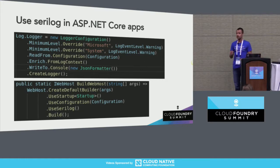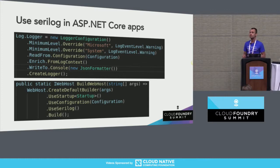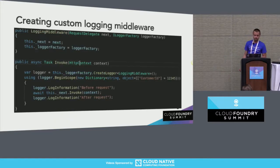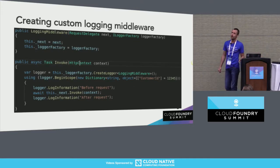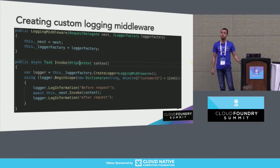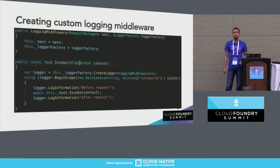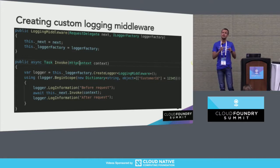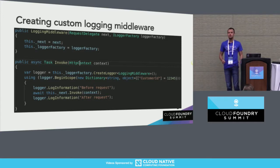The second code snippet configures the application itself. The most important line is the one that says UseSeriLog. This is an extension method that applies the previously configured logger to the current application and allows the ASP.NET Core app to use it.